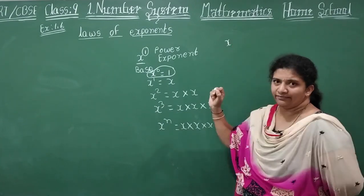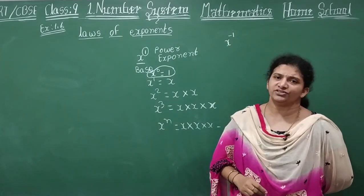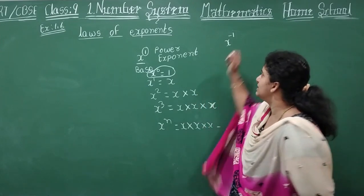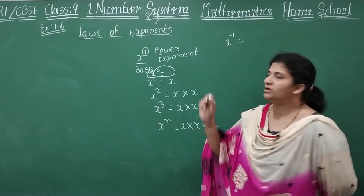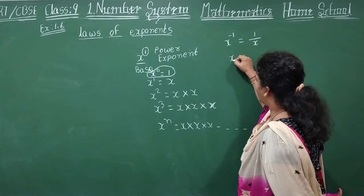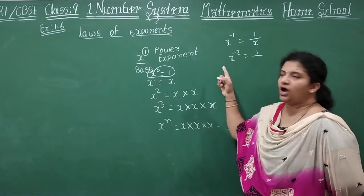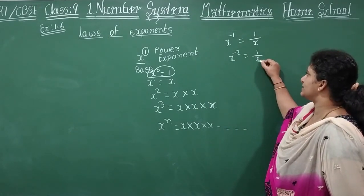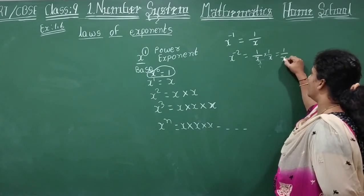Suppose you have a negative power. Suppose you have X power minus 1 — how do you write this, children? Do you multiply any negative X? No. Then how do you write this? You need to form an index form. What do you mean by index form? You rewrite this as 1 by X. Suppose you have X power minus 2 — what happens? 1 by X, divided by X again. So that will finally be 1 by X square.